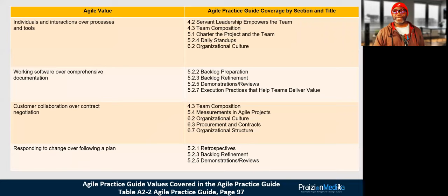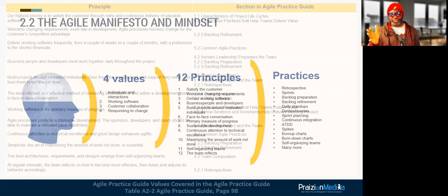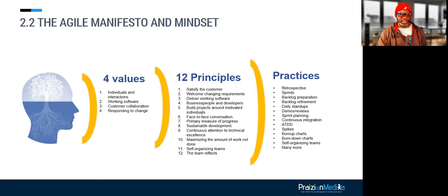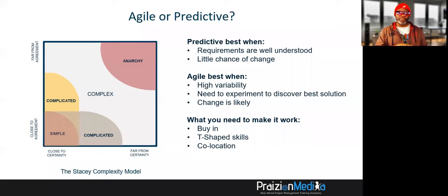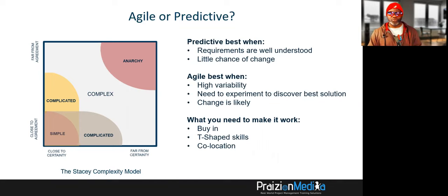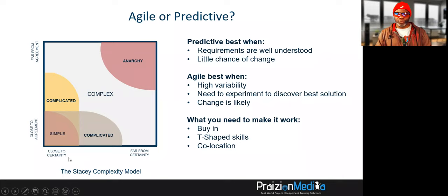PMI has a really helpful table that shows how each value and each principle is explained across the chapters. When we think about project management, we can either run projects using a simple approach, a more complex coping approach, or an anarchy coping approach called Agile. Predictive works best where the requirements are close to agreement and the technical approach is close to certainty. So we have two axes: on the Y-axis we have requirements, and on the X-axis we have technicality — what we call the Stacey complexity model.